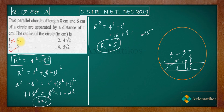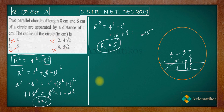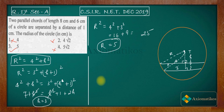So the answer is r = 5 cm — option three is correct and all other remaining options are false. If you have any doubt regarding this problem, ask in the comment section. You can also join our WhatsApp and Telegram groups; links are given in the description. Thank you.